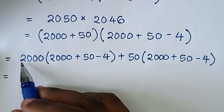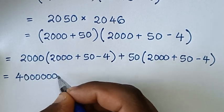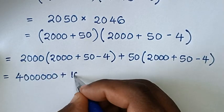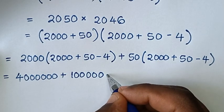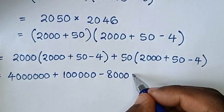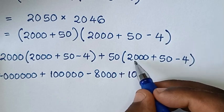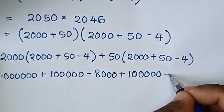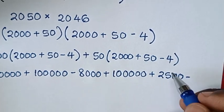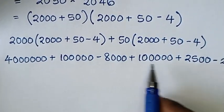So it will be: 2000 times 2000 is 4 followed by 6 zeros, then plus 2000 times 50 is 100 followed by 3 zeros, then minus 2000 times 4 which is 8 followed by 3 zeros, then plus 50 times 2000 which is 10 followed by 4 zeros, then plus 50 times 50 which is 2500, then minus 50 times 4 which is 200.